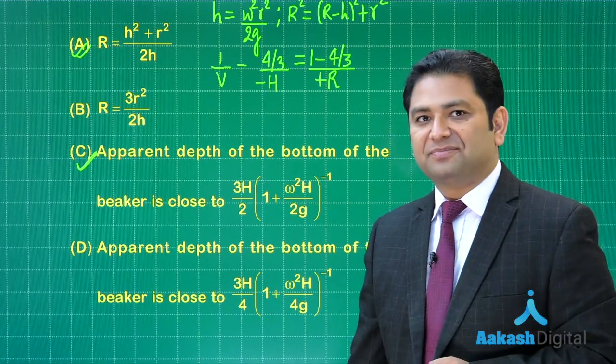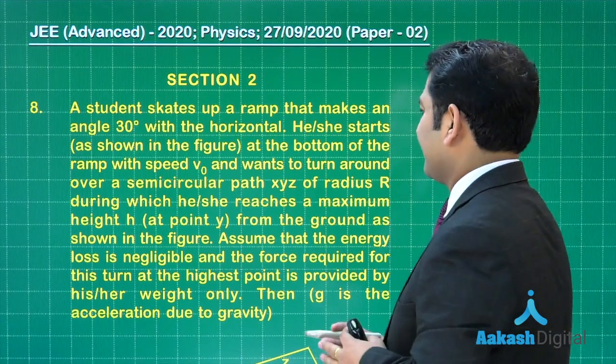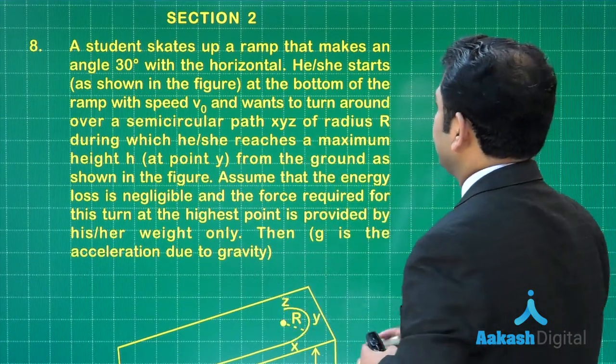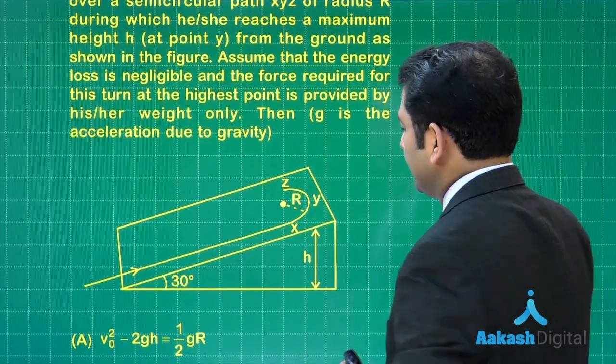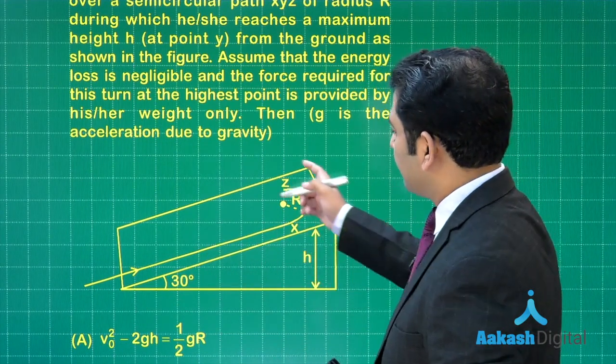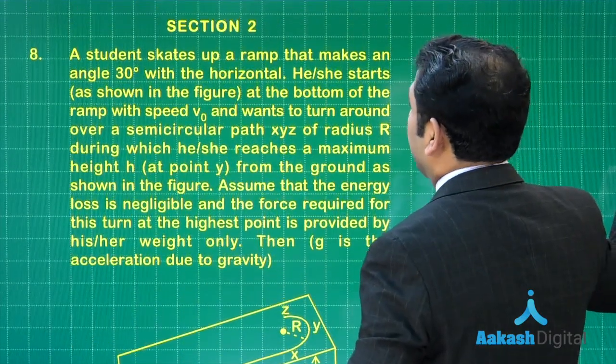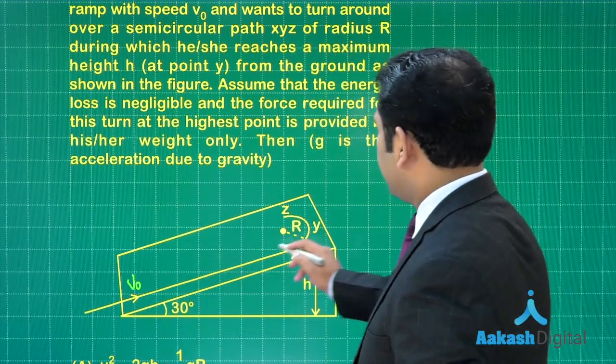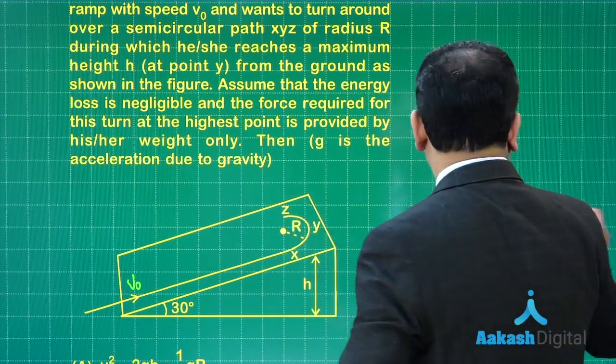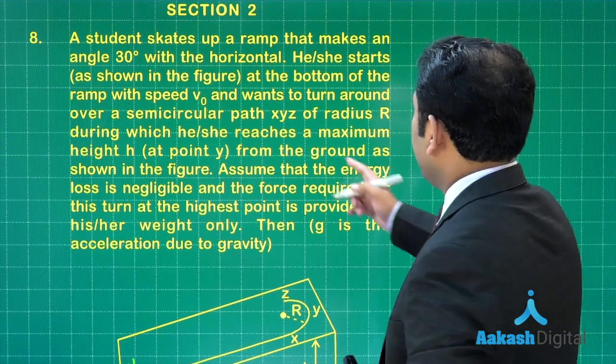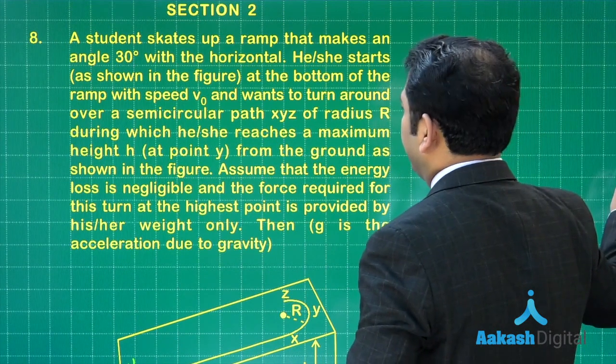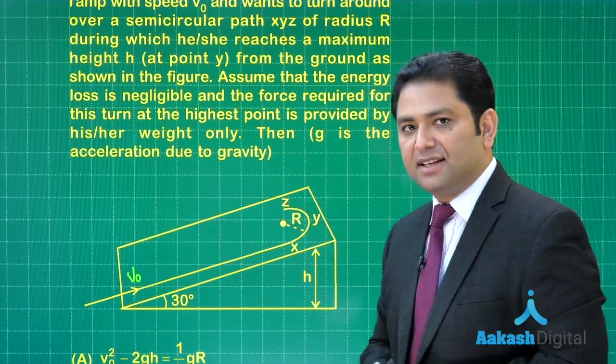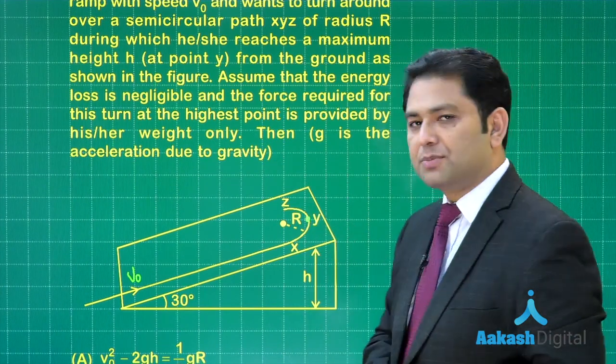So now let us go to the next one. Question number eight, this is again another very lovely question. Now it is from mechanics, work energy power, and a little bit of dynamics is involved. A student skates up a ramp that makes an angle 30 degrees with the horizontal. The student starts from here, goes up and makes around. At the bottom with the speed v₀—so the speed here at the bottom is v₀. Obviously as the student goes up, the speed will decrease.